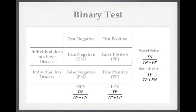Negative predictive value. Given that this test has come back as negative, what are the chances that this man really does not have cancer? So on the top we've got the true negatives — those negative tests for patients who really don't have cancer. And we want to know that as a proportion of all of the negative tests. So in the denominator we've got the true negatives and the false negatives. So that's how I like to remember the difference between specificity and sensitivity, and positive predictive value and negative predictive value.